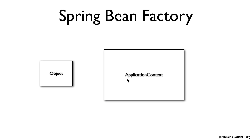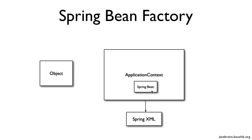The object makes a reference to the application context to get an instance of the bean. The application context refers to the Spring XML, gets the blueprint about the object, creates the bean, and hands it over. This is how a factory pattern works, and Spring can work this way — but this is not the default way in which Spring beans work.